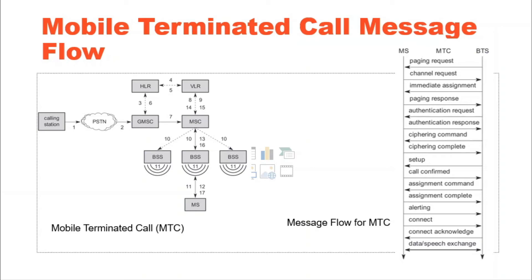Steps 12 and 13: if the MS answers, the VLR has to perform a security check, like setting up encryption. Steps 14 to 17: the VLR then signals to the MSC to set up a connection to the mobile station.